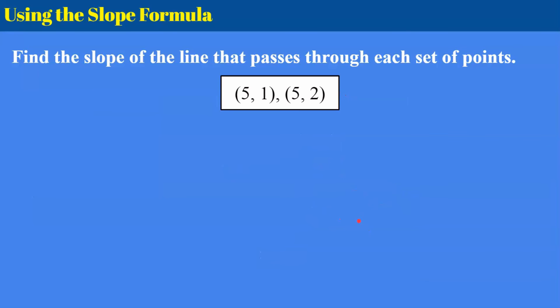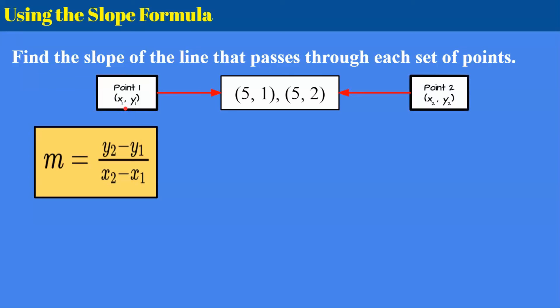All right moving on. Here's my fourth example for you and I'm going to write down my slope formula. Again if you want to try it on your own go ahead and pause. Identifying point 1, identifying point 2. I go ahead and plug everything in noticing that my y coordinate of point 2 over my x coordinate of point 2, my y coordinate of point 1, and I'm subtracting. 2 subtract 1 is 1. 5 subtract 5 is 0.